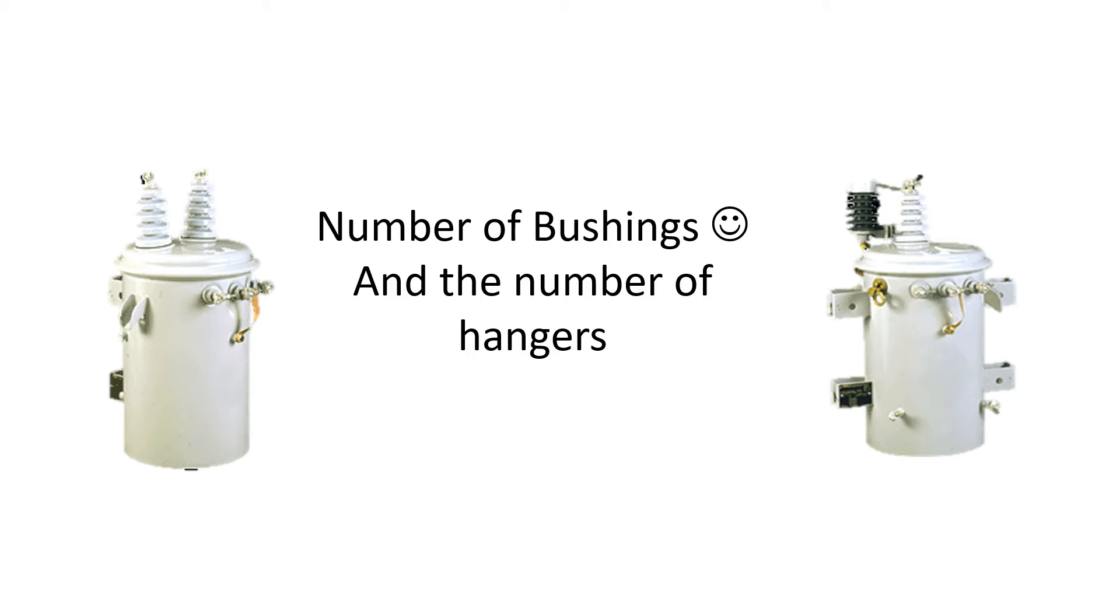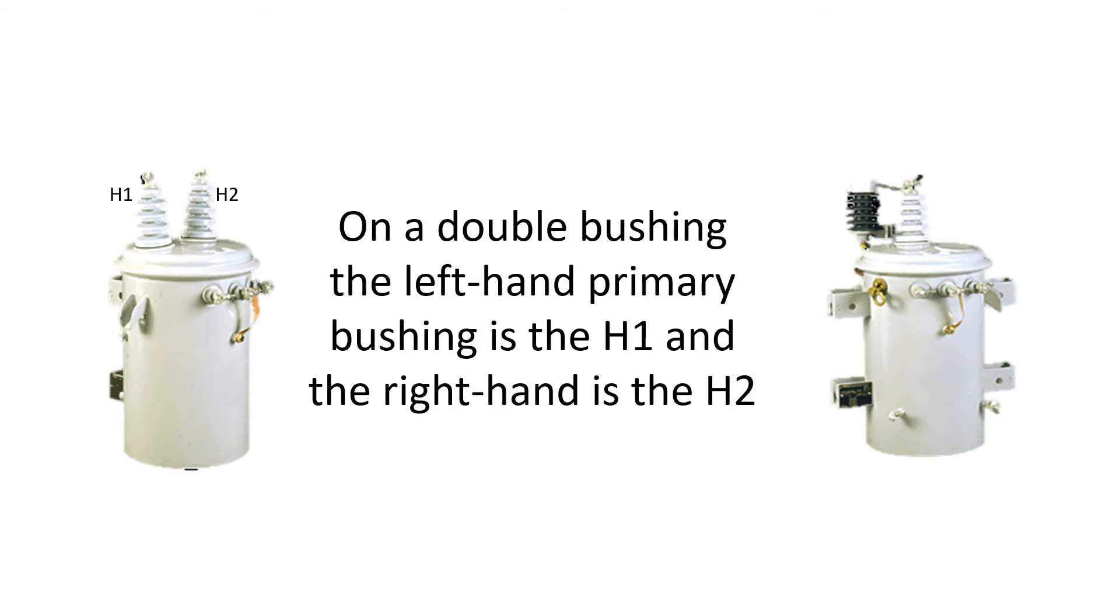Now, let's take a look at the one on the left. On a double bushing, the upper primary bushings—the upper left-hand is the H1, and the upper right-hand is the H2.